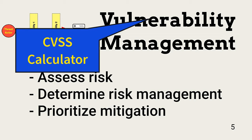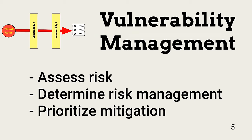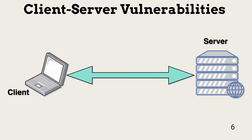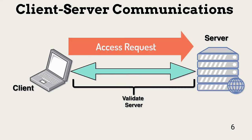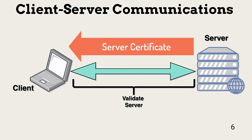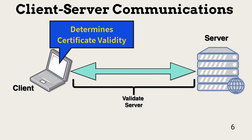Now let's look at some ways to avoid or correct specific vulnerabilities. Let's start with client-server communication vulnerabilities. In this example, the client is a user laptop — it can be on-premise or connecting via the cloud. The first step is to establish a secure connection. This begins by using a certificate to verify the identity of the server. In many cases, the client must also authenticate to the server.